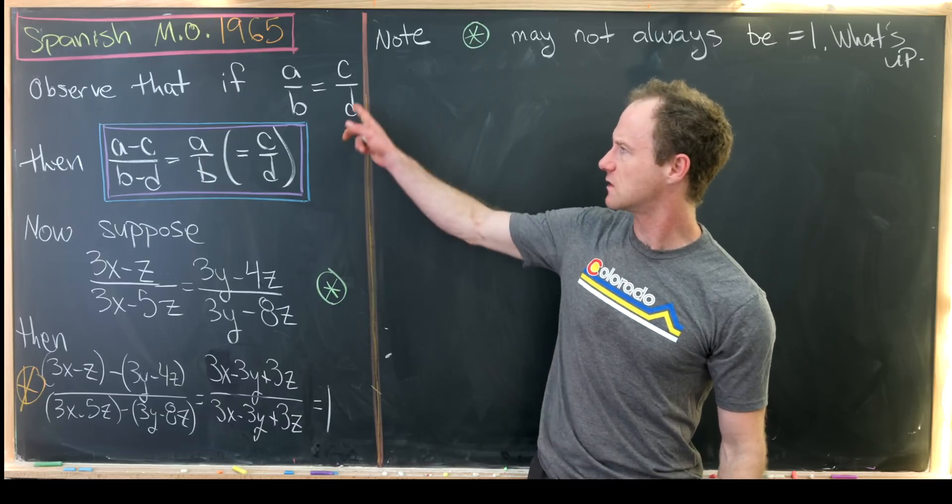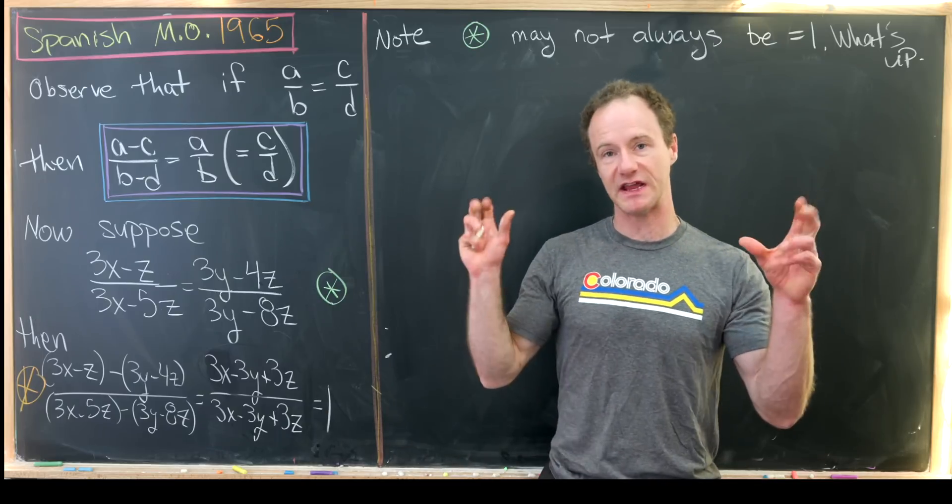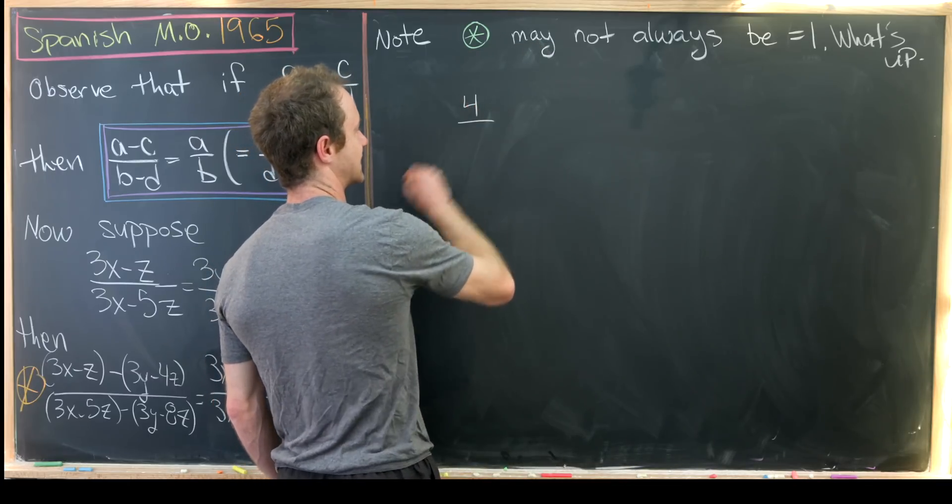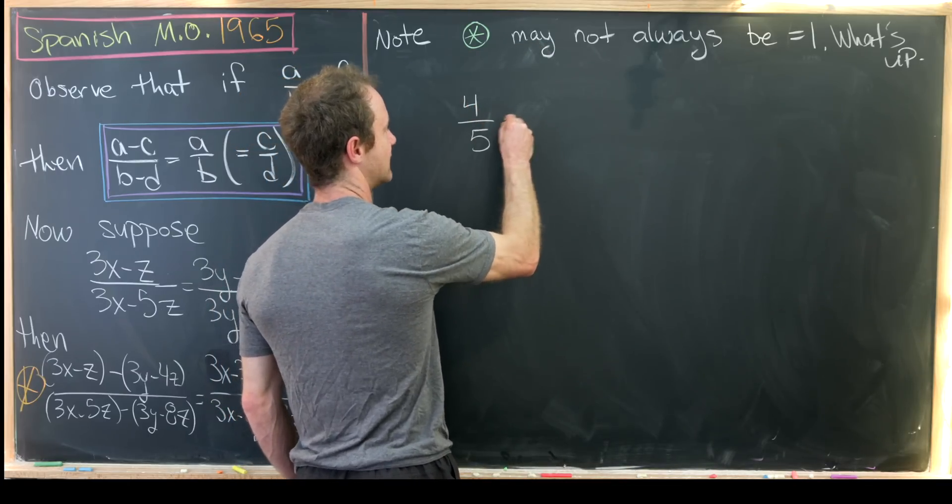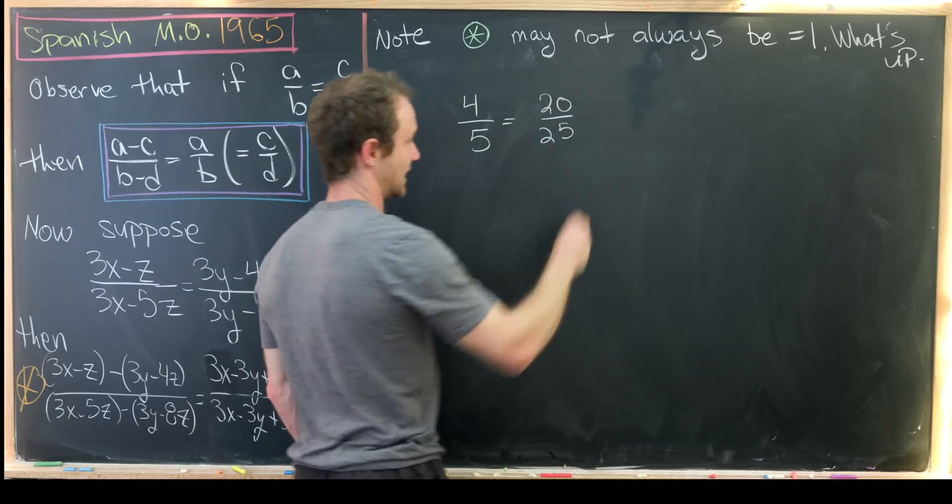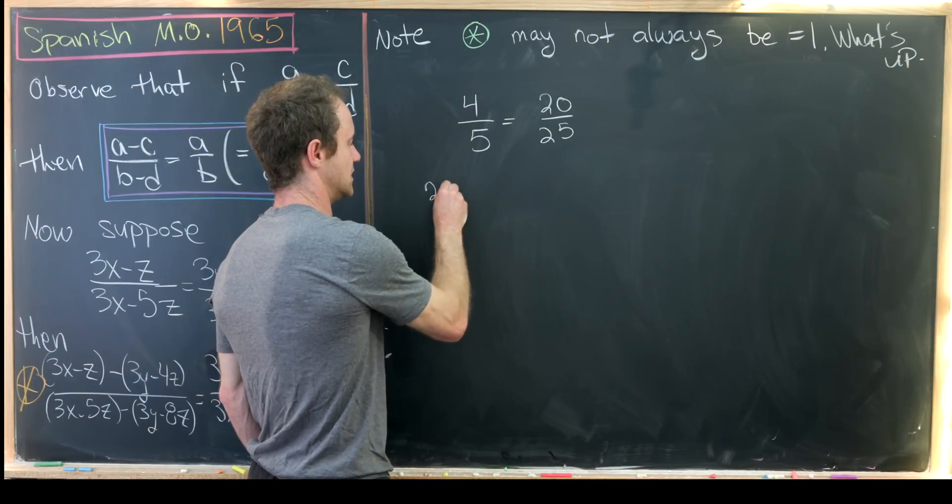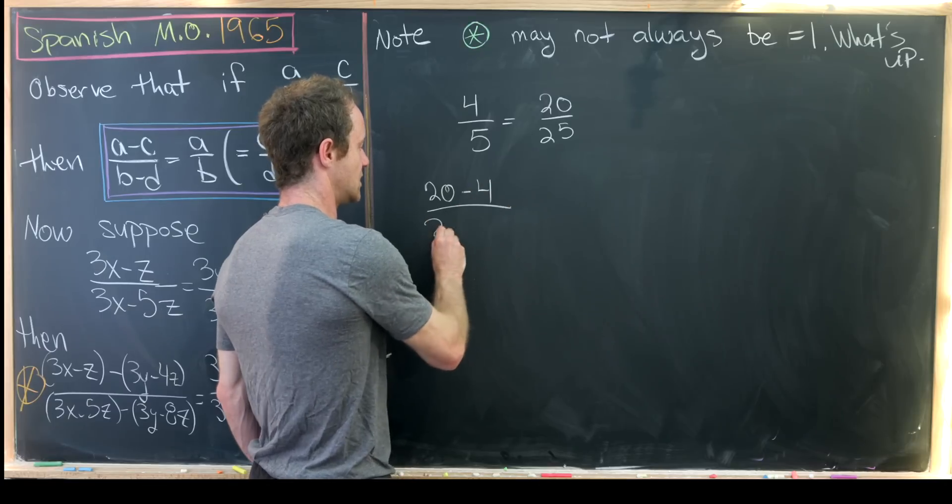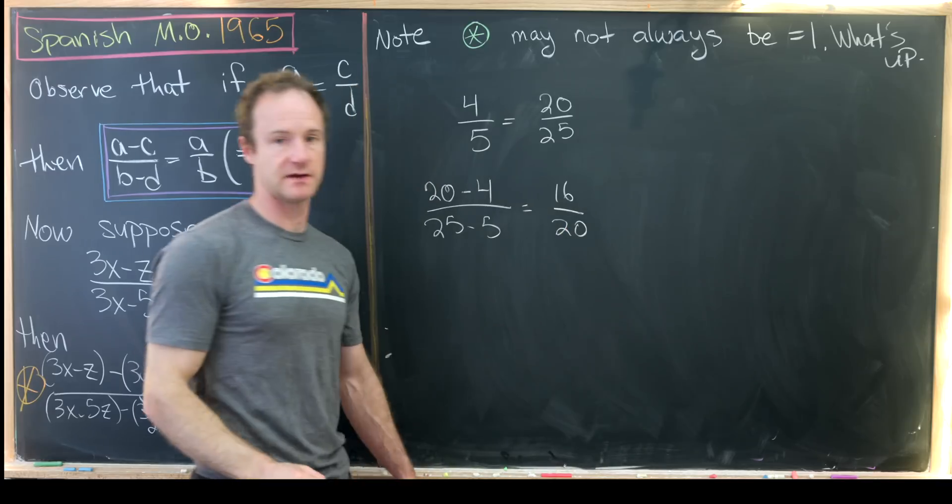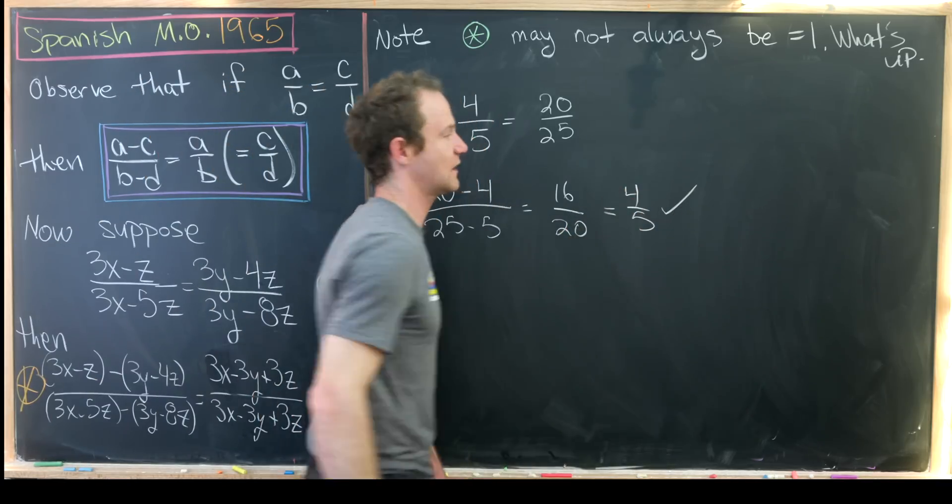So let's start by looking at some examples of this phenomenon, and then we'll prove this phenomenon kind of in general, and then move on to the solution. So here's a fairly simple example of this phenomenon. Let's take 4 over 5. Notice that's the same thing as 20 over 25. Now let's take the difference of the numerators and the difference of the denominators. So that'll be 20 minus 4 over 25 minus 5, and so that's going to be 16 over 20. But then this can reduce back down to 4 over 5. So everything works out there.